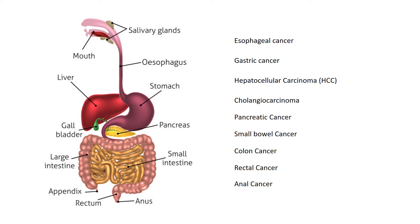What will we talk about? We're going to talk about esophageal, gastric, hepatocellular, cholangiocarcinoma — those are cancers that arise from the bile ducts — pancreatic cancers, small bowel cancers, colon cancers, rectal cancers, and anal cancers. The majority of these are adenocarcinomas because most of the GI tract is lined with columnar epithelium. Exceptions include anal cancer, which is generally squamous cell carcinoma, esophageal cancer, which can be either adenocarcinoma or squamous cell carcinoma, and hepatocellular carcinoma, which is neither. Neuroendocrine tumors will not be covered as radiation doesn't play much of a role in those.